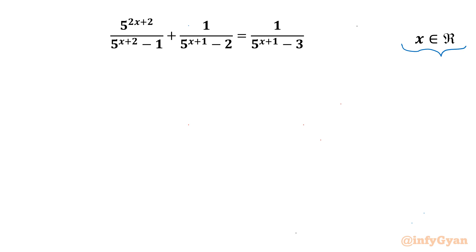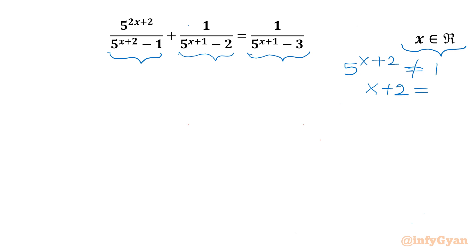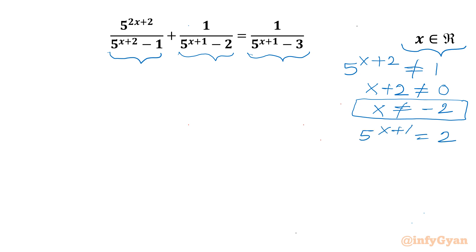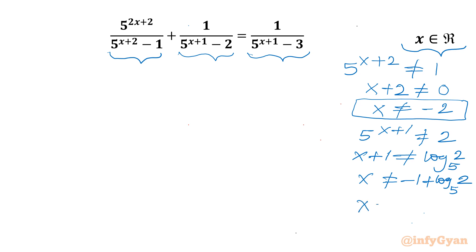Let's get started by considering our denominators — they cannot be 0. So 5^(x+2) should not equal 1, which means x should not equal -2. For the second denominator, 5^(x+1) should not equal 2, so taking log both sides: x cannot equal -1 + log₅(2). Similarly for the third denominator, x cannot equal -1 + log₅(3). These are our exempted solutions.